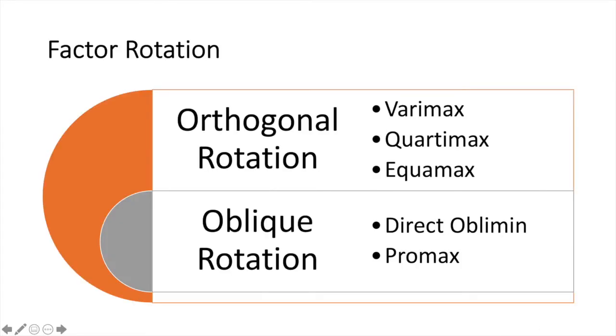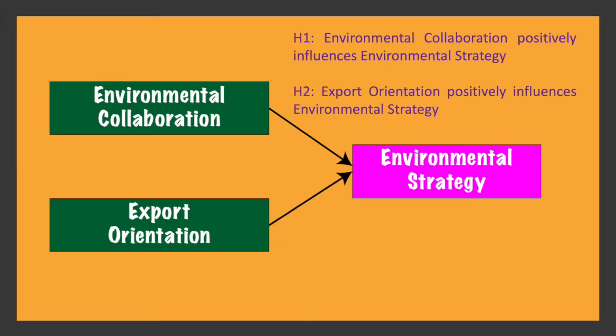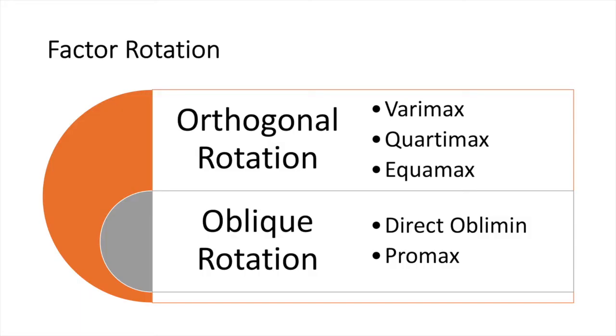One aspect that we have to pay detailed attention would be factor rotation. We have orthogonal rotation and oblique rotation. For orthogonal rotation, it takes place when the factors are uncorrelated. Therefore, we will be either using VariMax, QuartiMax or EquiMax. In our case here, we have independent variables and dependent variable. Therefore, we allow them to correlate. So we'll be using the oblique rotation where we can either choose the direct oblimin or ProMax. So let's move into SPSS in order for us to conduct exploratory factor analysis.